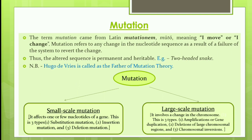The altered sequence is permanent and heritable. An example of mutation includes two-headed snakes. Hugo de Vries is called the father of mutation. Mutation is of two types: small-scale mutation, which affects one or more nucleotides of a gene, subdivided into substitution, insertion, and deletion mutations; and large-scale mutation, involving chromosomal changes — amplification or gene duplication, deletion of large chromosomal regions, and chromosomal inversion.